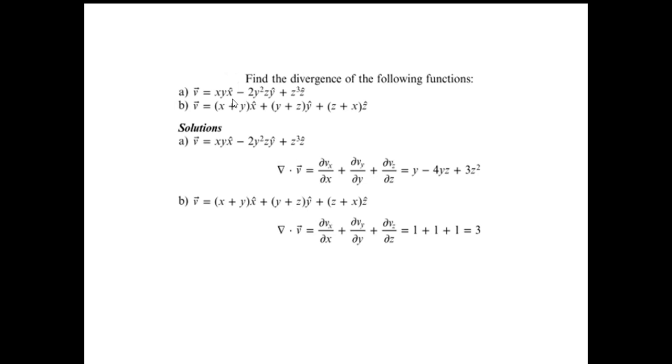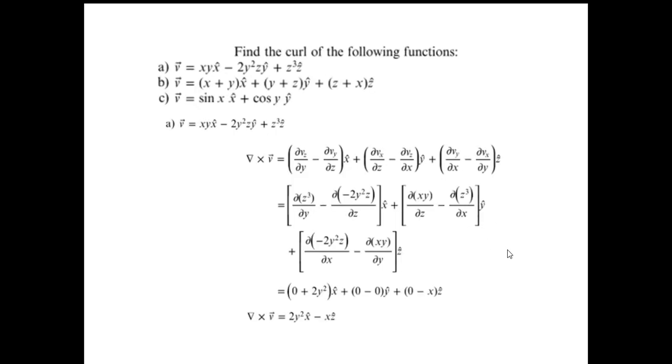Next is find the divergence of following functions. Now, this is a vector function. So, xy x cap minus 2y squared z y cap plus z cubed z cap and some more function is given. Now, what you have to calculate is del dot v. That is a scalar product or dot product of the two vectors. Del is also a vector and this is also a vector. Now, this is a pretty straight job and you get this particular thing. Similarly, calculate the divergence of this field. Del dot v is del vx upon del x, del vy upon del y, del vz upon del z. Now, each is going to get differentiated by 1 plus 1 plus 1, so this will be only 3.